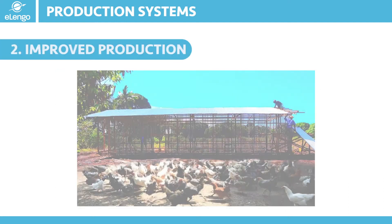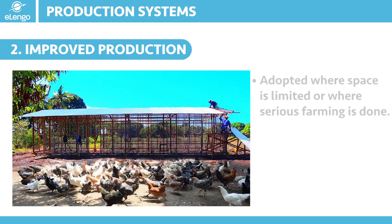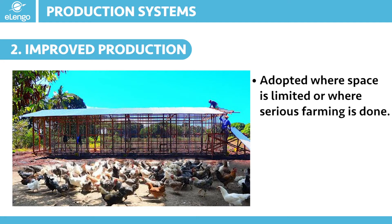Let us now look at the improved production, or what is also referred to as the semi-intensive method. This approach is adopted where space is limited and where farmers want to take farming seriously. The poultry house is built within the run — a run being a fenced area that is attached to the chicken coop — and allows the birds to roam within the space freely. It is adequately fenced to prevent predators from accessing the birds. The birds have the comfort of a coop and a secured run to exercise and scavenge for extra food.